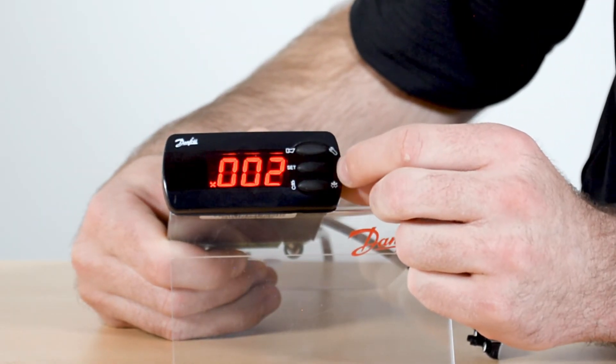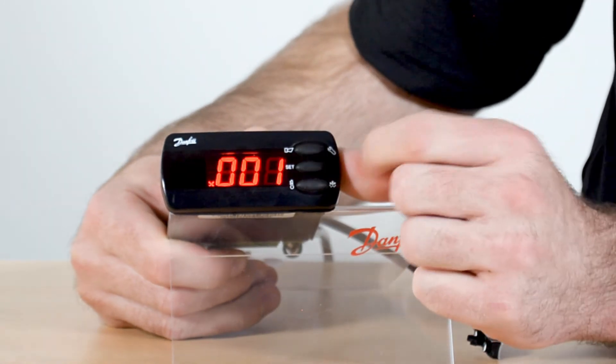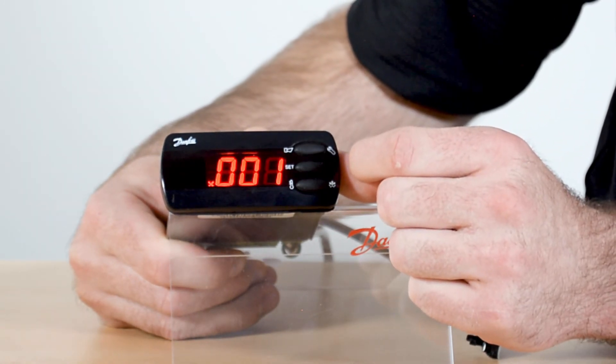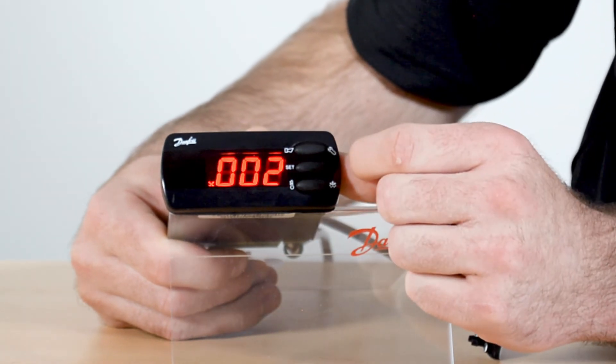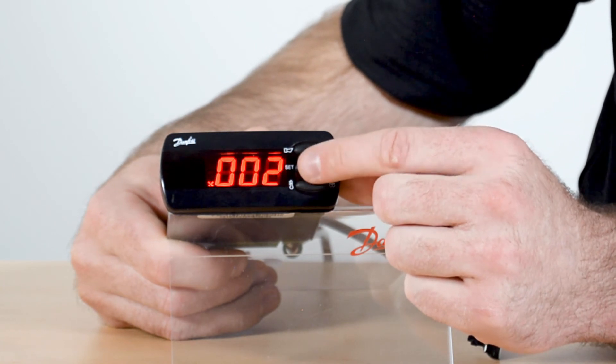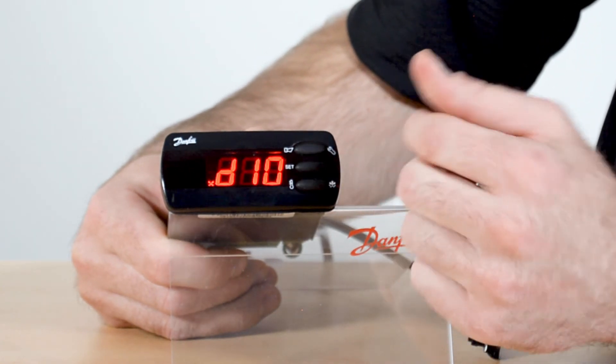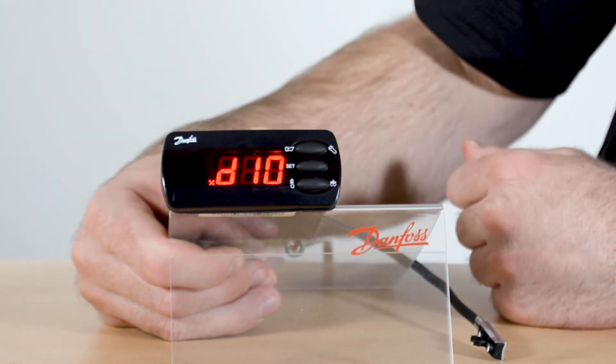D10 is the defrost stop sensor. If you set this for zero it will terminate on time. If you set it to one it will terminate on S5 dedicated defrost term sensor, and if you set it to two it will terminate on your S4 temperature sensor. Press to confirm and then wait for it to timeout and it will go back to the main screen.